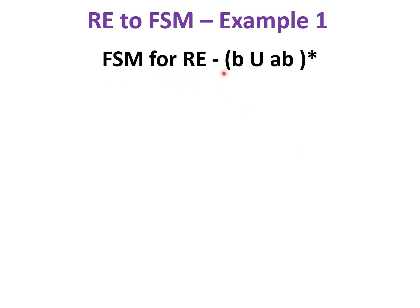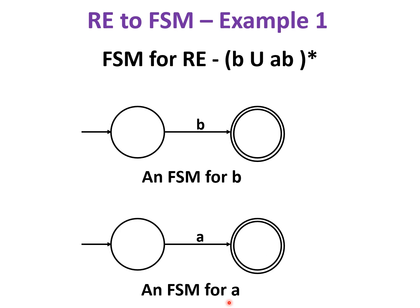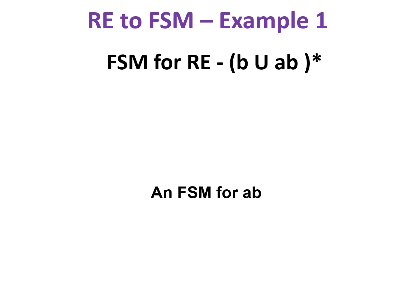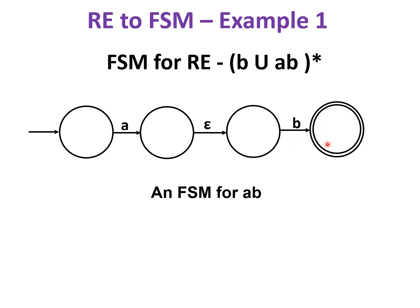Let us see the step-by-step construction of an FSM for the regular expression (B∪AB)*. First, build FSM for B: an initial state with a transition labeled B to a final state. Similarly, build FSM for A: an initial state with a transition A to a final state. Next, build FSM for AB — A concatenated with B — using an epsilon transition between them, giving the final state.